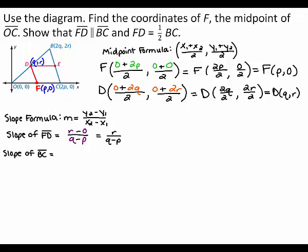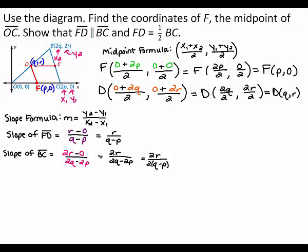To find the slope of segment BC, let x1 equal 2p, y1 equal 0, x2 equal 2q, and y2 equal 2r. You can substitute these values into the slope formula. When you simplify, 2r minus 0 gives you 2r in the numerator. Next, notice that each term in the denominator has a factor of 2, so you can factor out a 2 from each term in the denominator. Because there is a factor of 2 in both the numerator and the denominator, you can divide out this common factor, leaving you with r divided by the quantity (q minus p). So, the slope of segment BC is r divided by the quantity (q minus p).